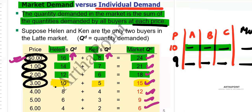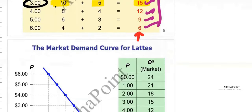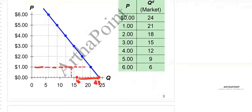In our case, we are assuming there are only two buyers: Helen and Ken. At price $0, Helen was demanding 16 units and Ken demanded another 8 units, so I add 8 to get 16 and 8 more, which makes 24 — this is the market demand. Similarly, at $1, Helen was demanding 14 units, and to those 14 I added 7 more to get 21 units, which is the demand of the market.